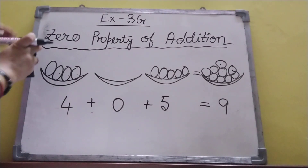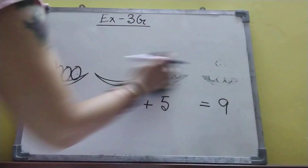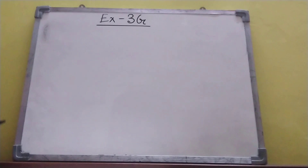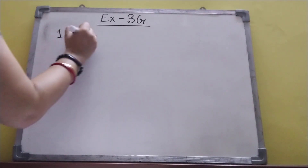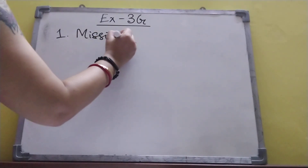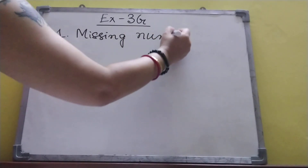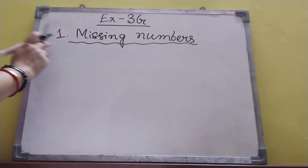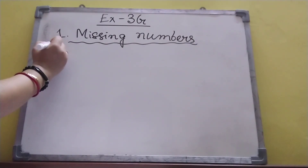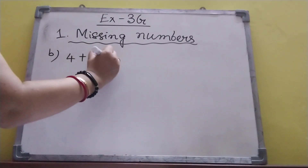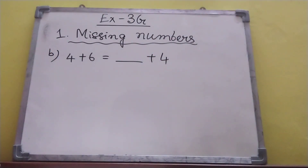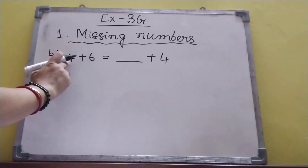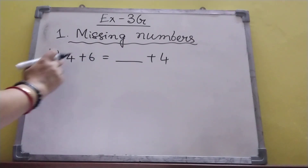Let me start with the exercise now. Question number 1: Missing numbers. So B: four plus six equal to dash plus four. Here, we are changing the order — this is order property. Four came to this place and six will come to this place, so the answer is six.